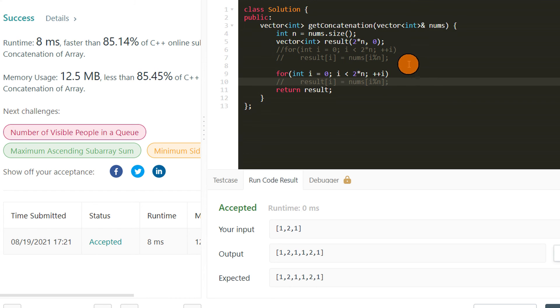Now what we will do is run just a loop from 0 to n minus 1. This is the value of i, and then result[i] is nums[i] and result[i + n] is also nums[i].